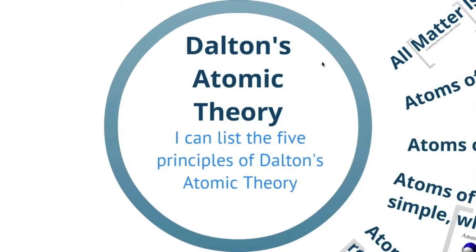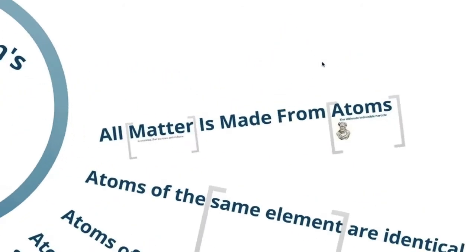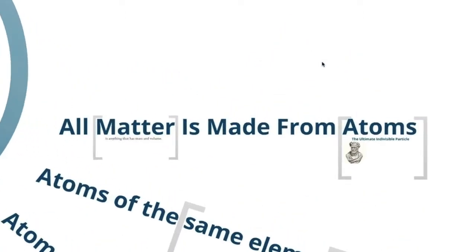I can list the five principles of Dalton's Atomic Theory. Those are my five principles. The first one is all matter is made from atoms. That is the first principle.